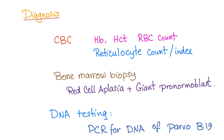Diagnosis on CBC: you will get low hemoglobin, low hematocrit, and low RBC count — because it's anemia. Reticulocyte count or reticulocyte index is decreased. Why? Because the bone marrow has failed, but only the red cell line — so the baby RBCs, the reticulocytes, are decreased.